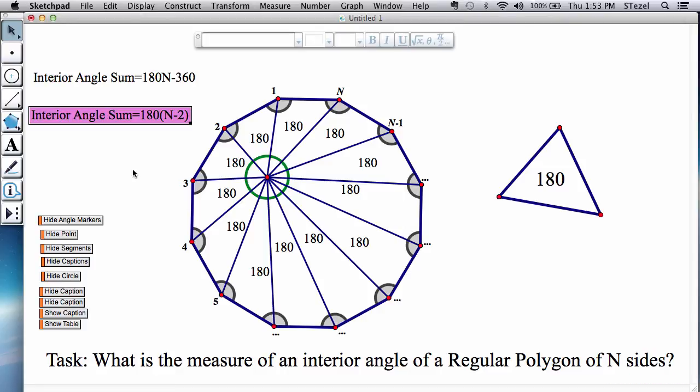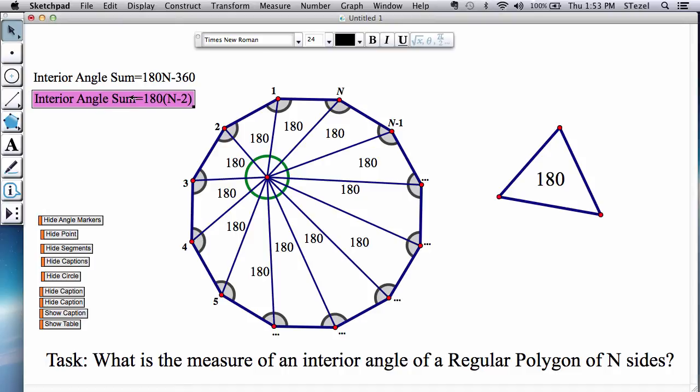Now when you do the math and you simplify things a little bit using distributive property, you can realize that you can factor 180 and then write this formula a little bit more compactly as 180 times (n minus 2).